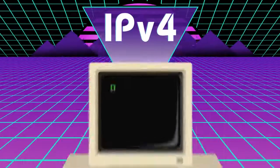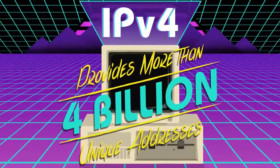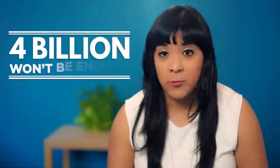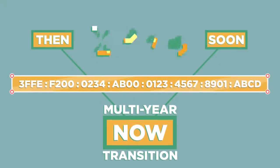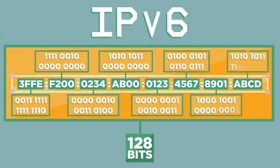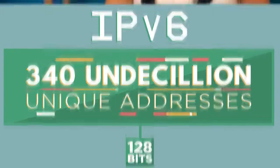This version of IP addressing is called IPv4. It was designed in 1973 and widely adopted in the early 80s, and provides for more than 4 billion unique addresses for devices connecting to the internet. But the internet has turned out to be much more popular than even Vint Cerf imagined, and 4 billion unique addresses won't be enough. We're now in the middle of a multi-year transition to a longer IP address format called IPv6, which uses 128 bits per address and provides over 340 undecillion unique addresses. That's more than enough for every grain of sand on Earth to have its own IP address.